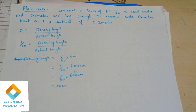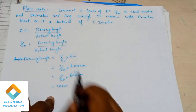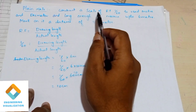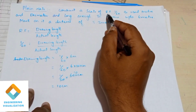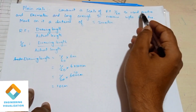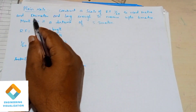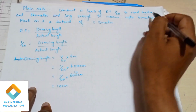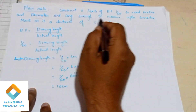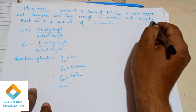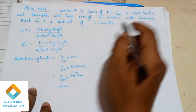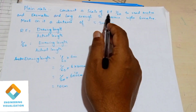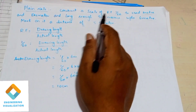Welcome to the engineering visualization channel. Today we are going to see a problem on plane scale. Construct a scale of RF 1/60 to read meter and decimeter, long enough to measure up to 6 meter, and mark on it a distance of 5.3 meter.